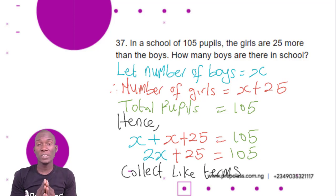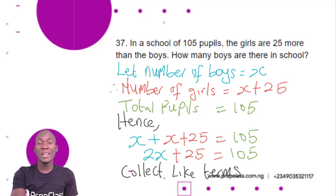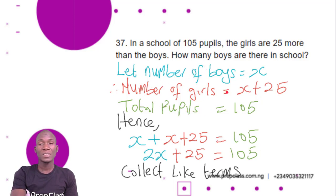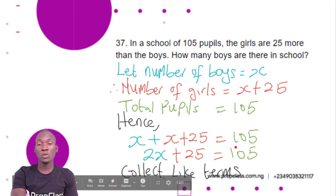We have to find the number of boys in the school. We are given that the number of girls is 25 more than that of the boys. So let the number of boys be x since that's what we are looking for. This means the number of girls equals x plus 25. When we add 25 to the number of boys, we get the number of girls. The total pupils in the school is 105. So if we add the number of boys and the number of girls, we get the total: x plus x plus 25 equals 105.